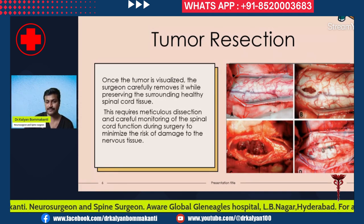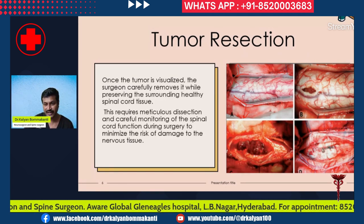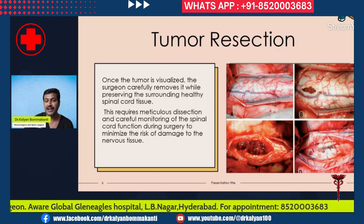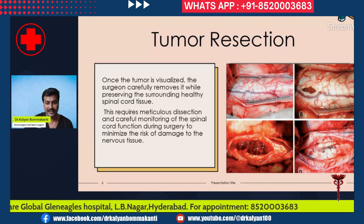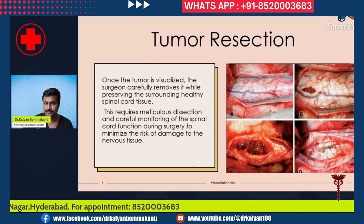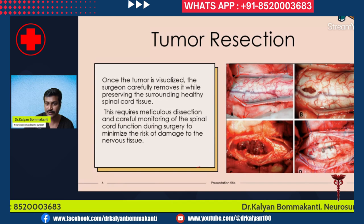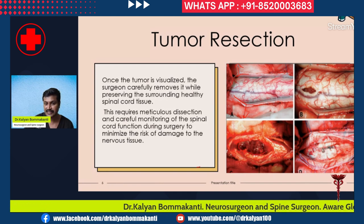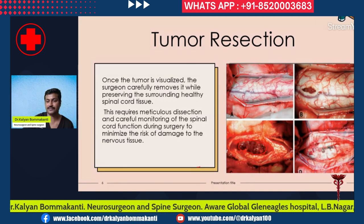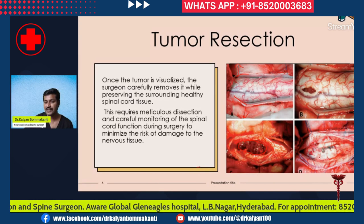The small feeding vessels can be coagulated. The tumor is well exposed using various microsurgical techniques. You develop the cleavage plane from the surrounding spinal cord and remove the tumor in total. If it is densely adherent, you may have to remove some portions of the tumor. Here the tumor has been completely removed and the spinal cord is well seen.